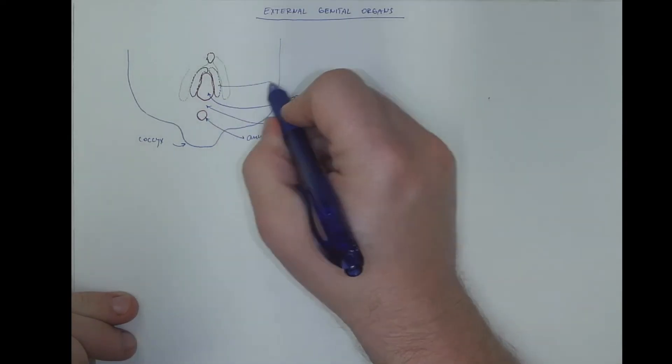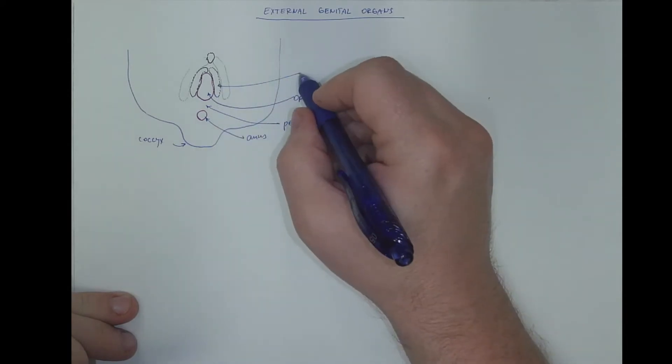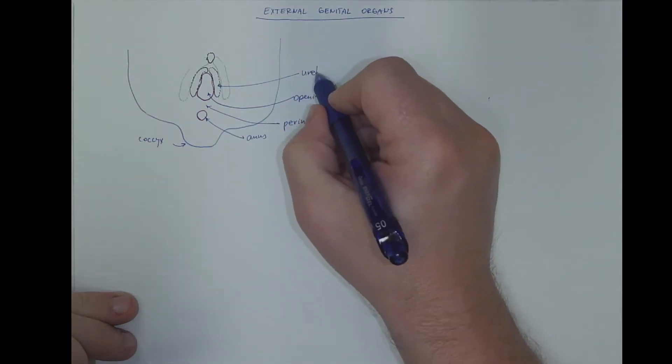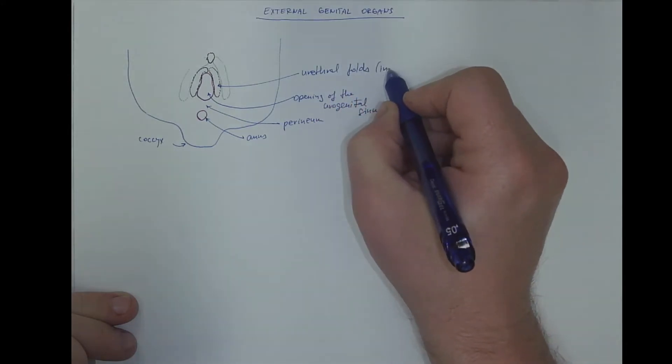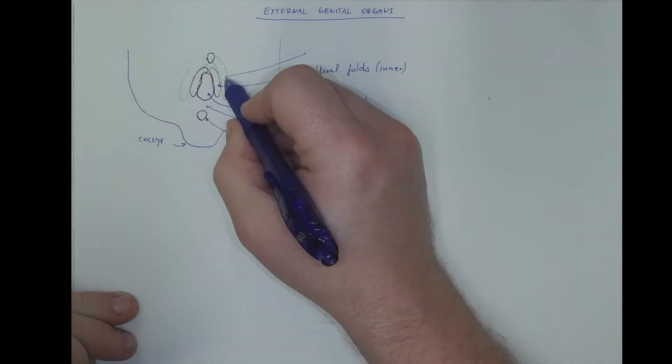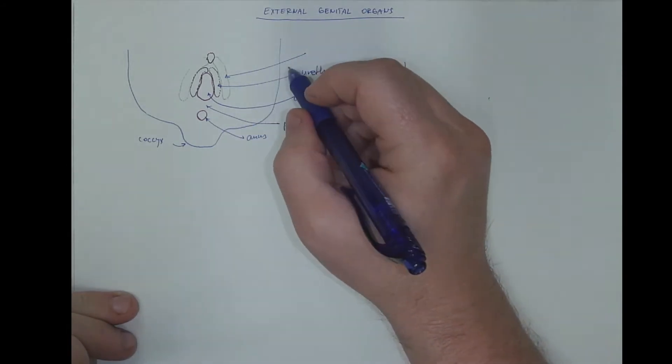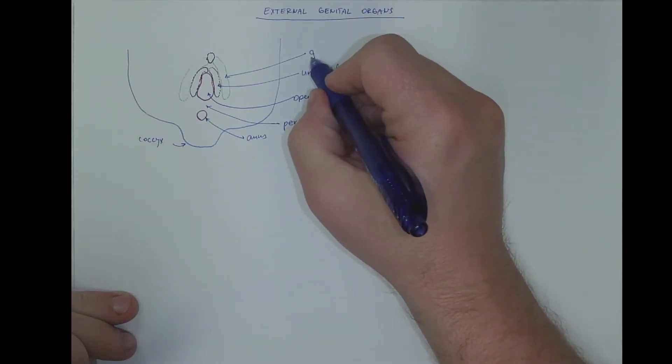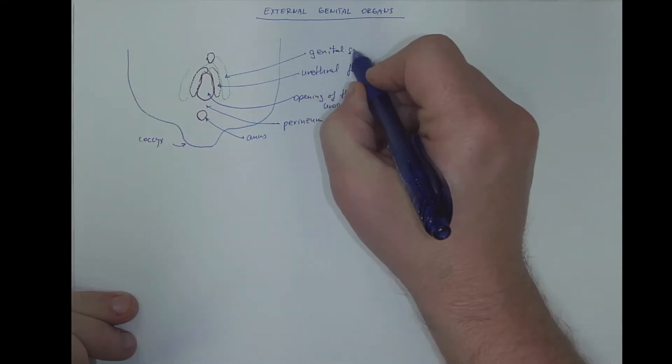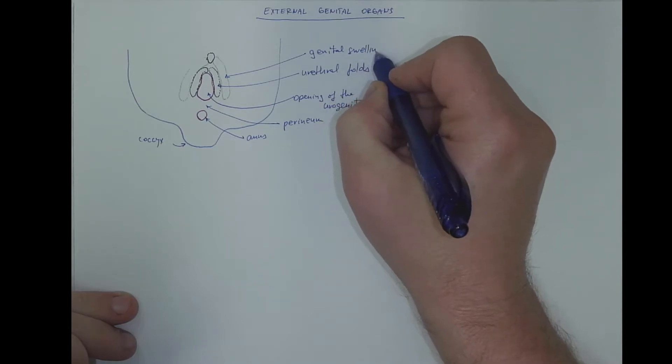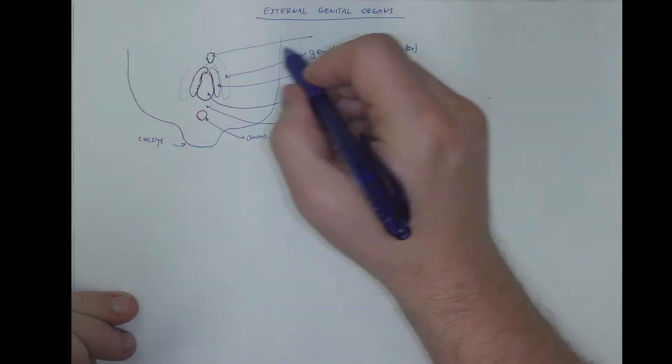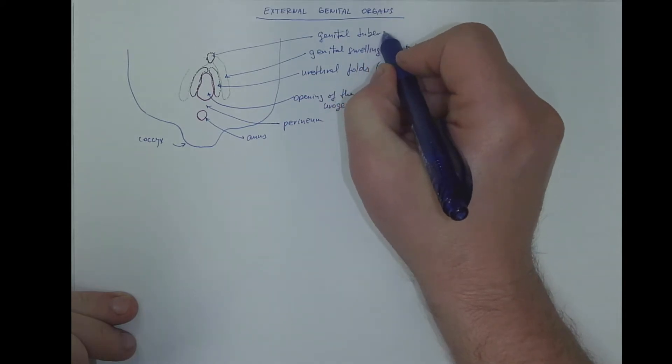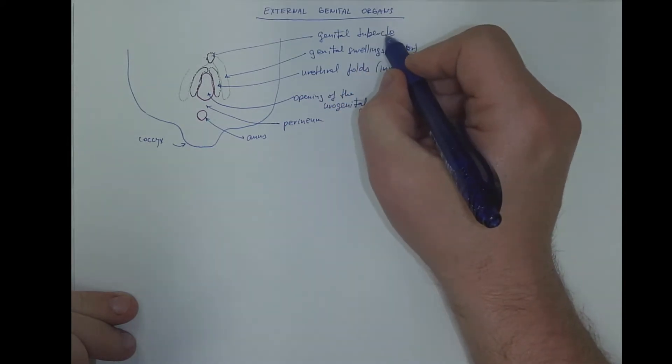These are surrounded by the urethral folds - the inner folds - and the outer genital swellings. This is the genital tubercle, formerly also known as the phallus.